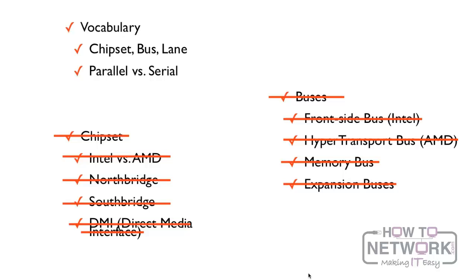We talked about parallel versus serial communication — parallel meaning more than one bit of data at a time, whereas serial is one bit of data at a time. We also talked about the chipsets and the two major manufacturers.